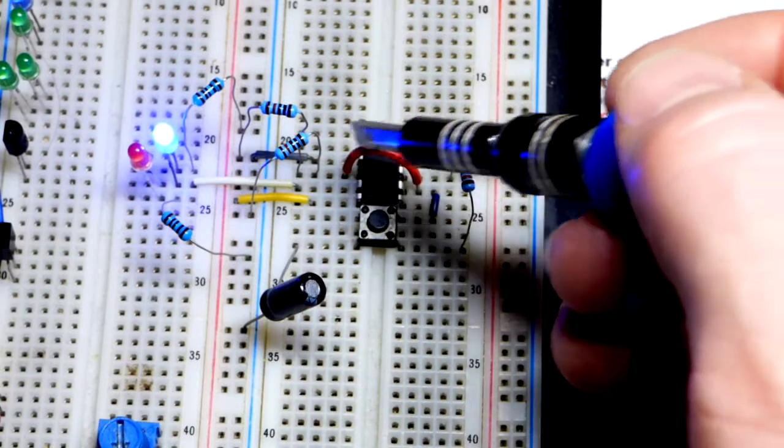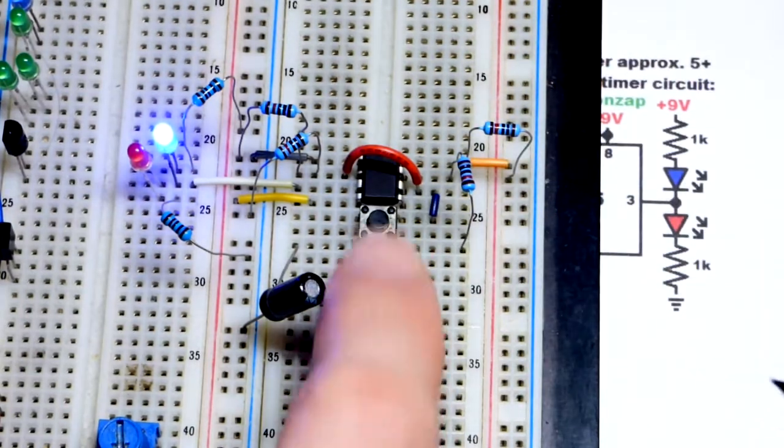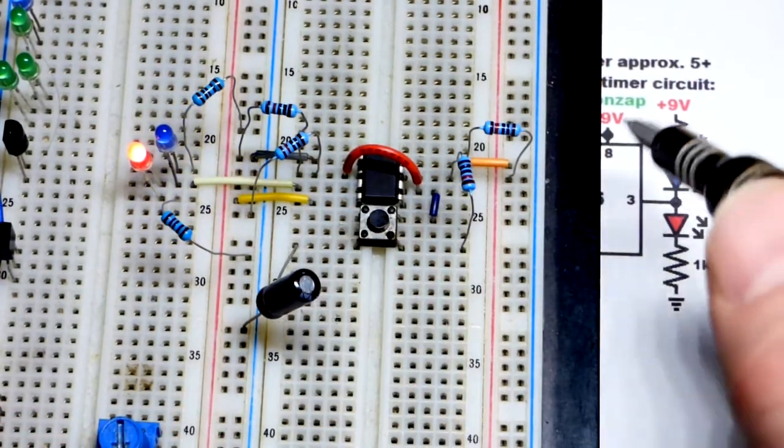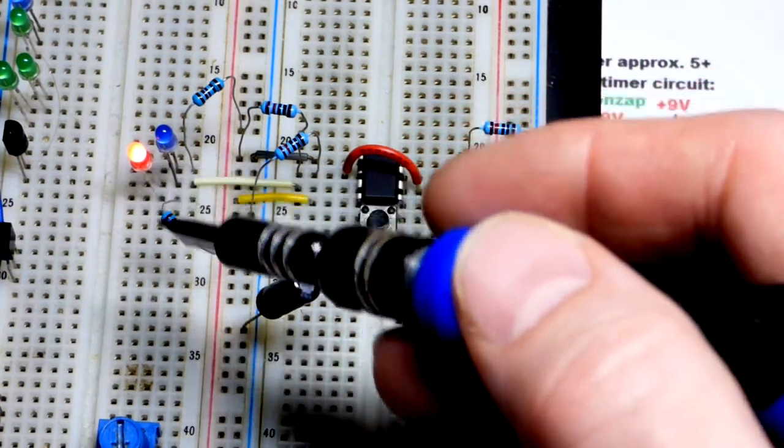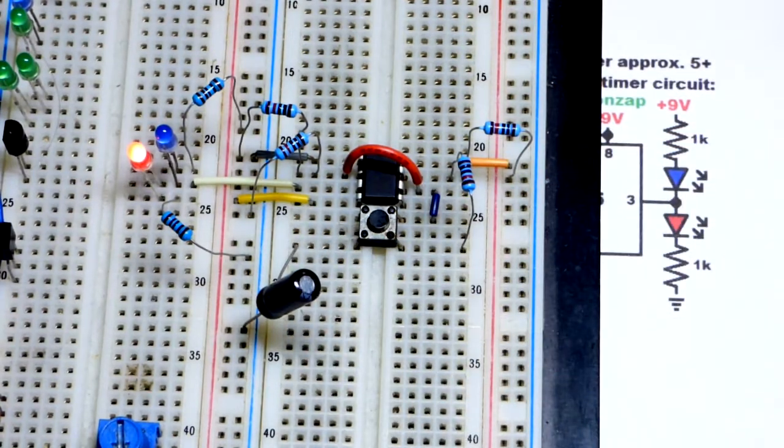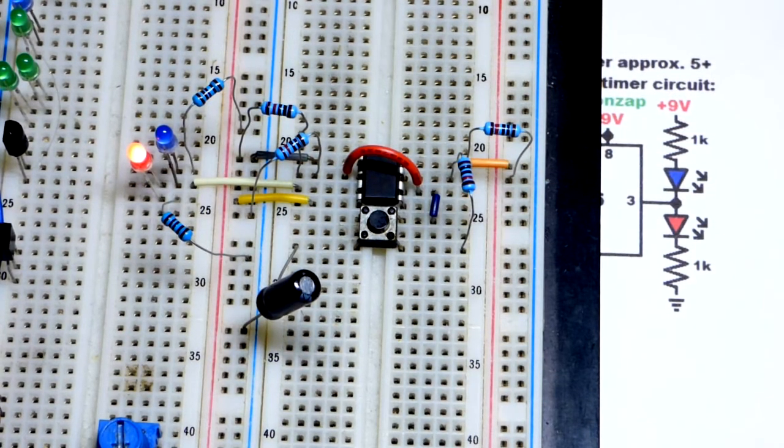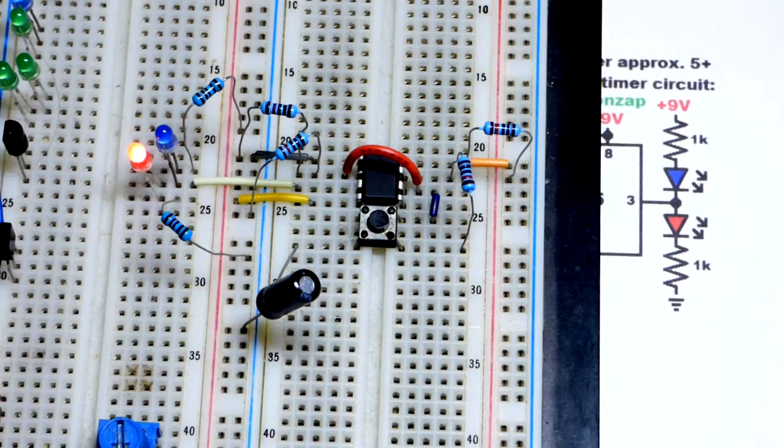For the red LED, of course that means the output's high, as close to nine volts as it can, going through the red LED and the one kilo ohm resistor down there. We could use a lower value to get the red LED brighter if we wanted to. 470 would work with this nine volts.